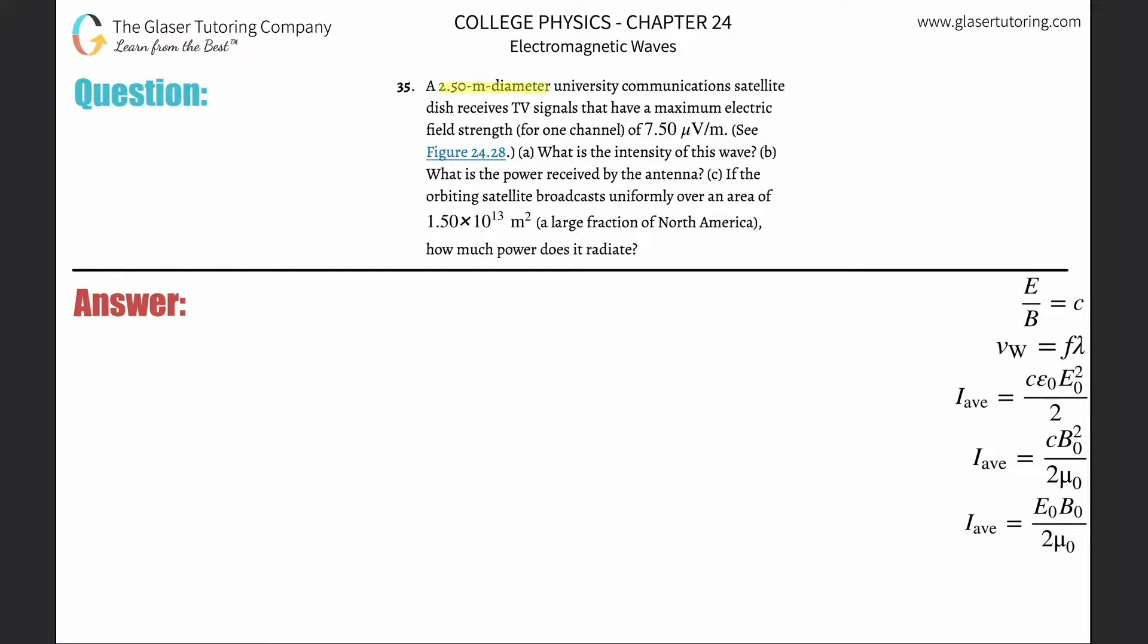Number 35: A 2.5 meter diameter university communication satellite dish receives TV signals that have a maximum electric field strength of 7.5 microvolts per meter. What is the intensity? All right, so we've seen this before. The formula that relates intensity to electric field is...